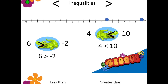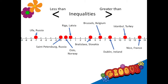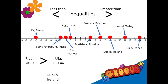Let's bring back the vacation options and compare a few city temperatures. Instead of using integers we can replace the numbers with the names of the cities. What's the temperature in Riga compared to the temperature in Ufa? Riga is to the right of Ufa on the number line, so Riga is warmer — the temperature in Riga is greater than the temperature in Ufa. What about Dublin versus Nice? Nice is to the right of Dublin, so the temperature in Nice is higher — the alligator eats the bigger number.